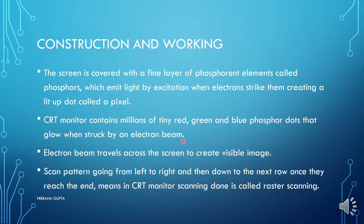An image is formed on the screen. The scan pattern goes from left to right and then down to the next row. Once they reach the end, this scanning method used in the CRT monitor is called raster scanning. Raster scanning is the scanning method used in CRT — from left to right and finally from the right corner back to the topmost left corner.